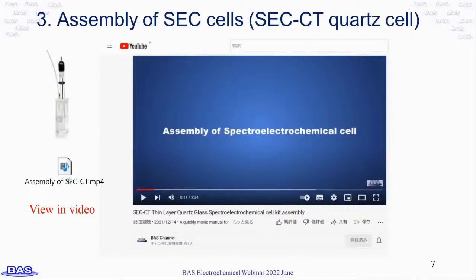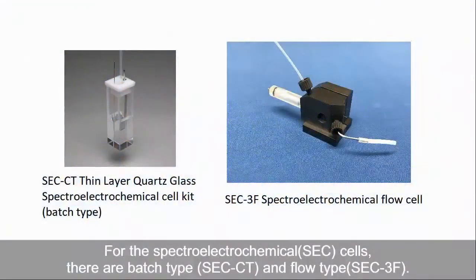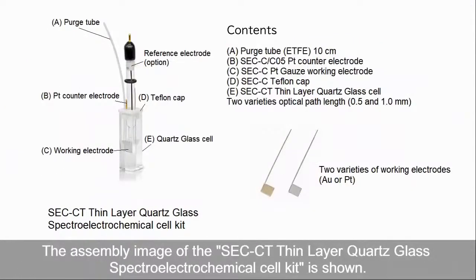Next, I will show you how to assemble the SECCT quartz cell by video. You can also watch the video on our BAS channel. For the spectroelectrochemical cells, there are batch type SECCT and flow type SEC3F. In this video, we will introduce how to assemble the SECCT thin layer quartz glass spectroelectrochemical cell kit. The assembly image of the SECCT thin layer quartz glass spectroelectrochemical cell kit is shown. Here are the details of the components.